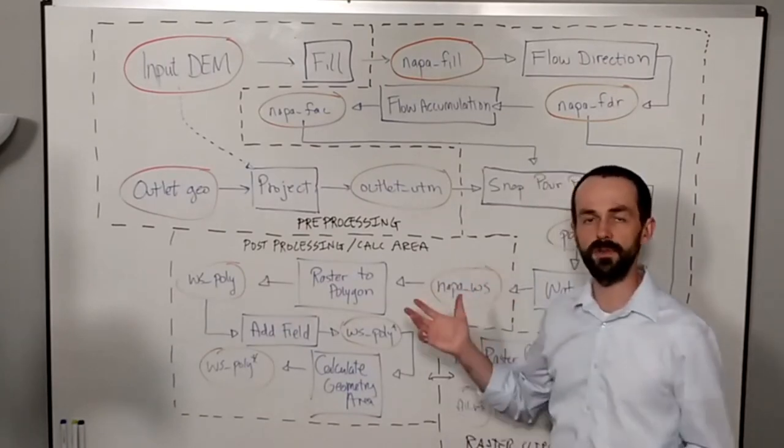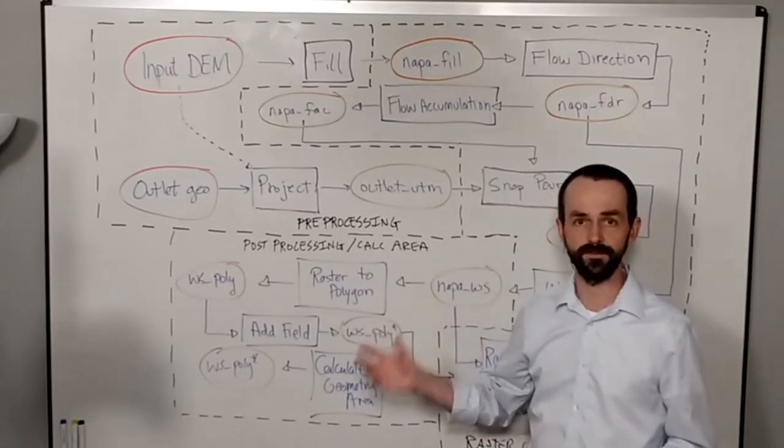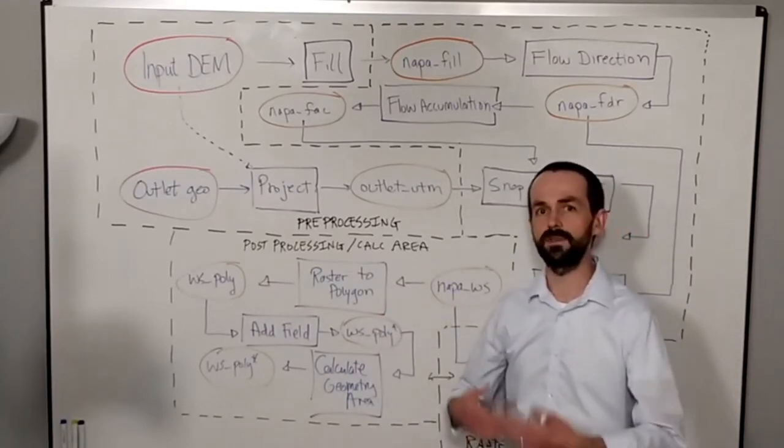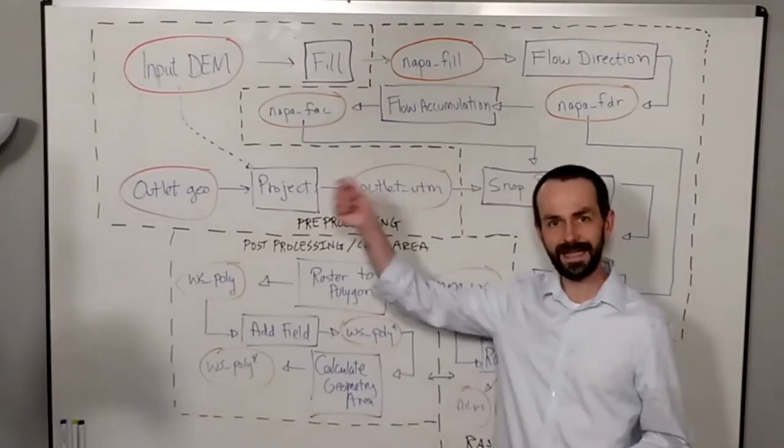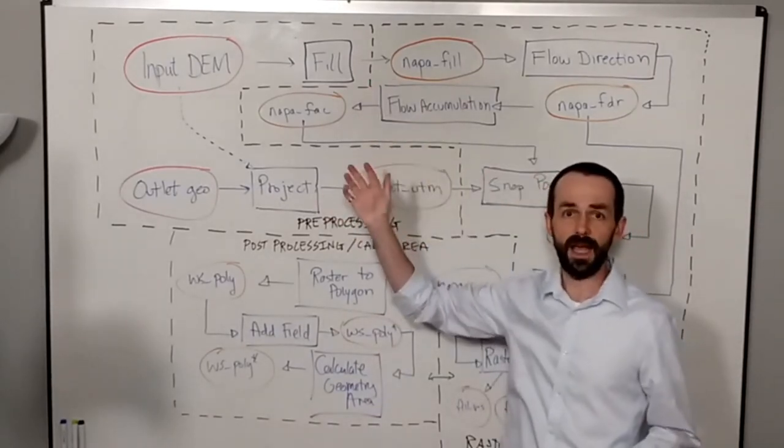This is the workflow for outlining or delineating a single watershed. The process becomes much more cumbersome with clicking individual buttons and managing output layers.